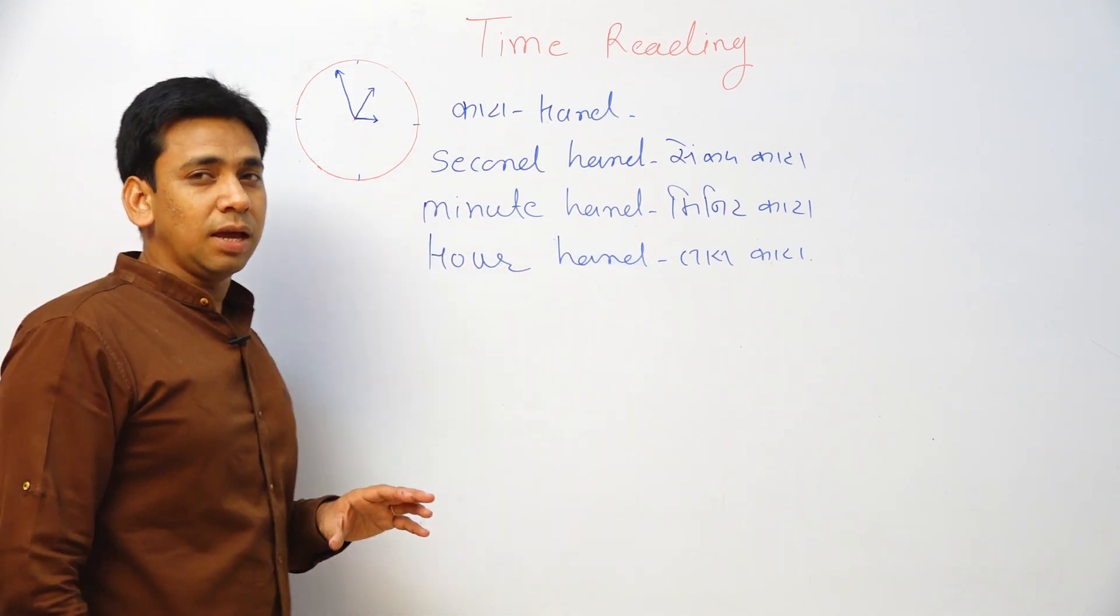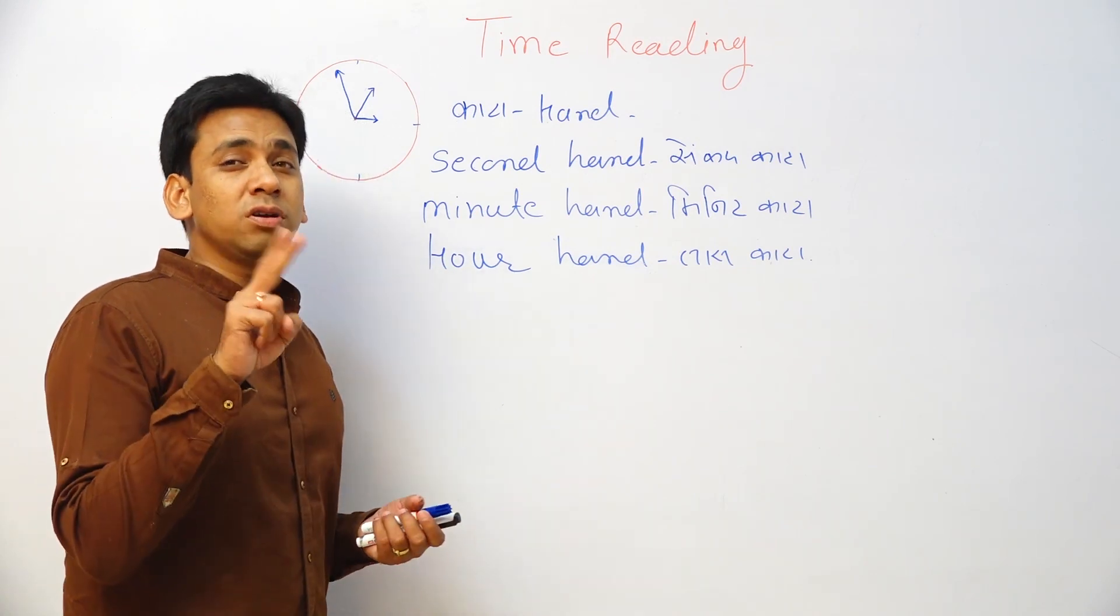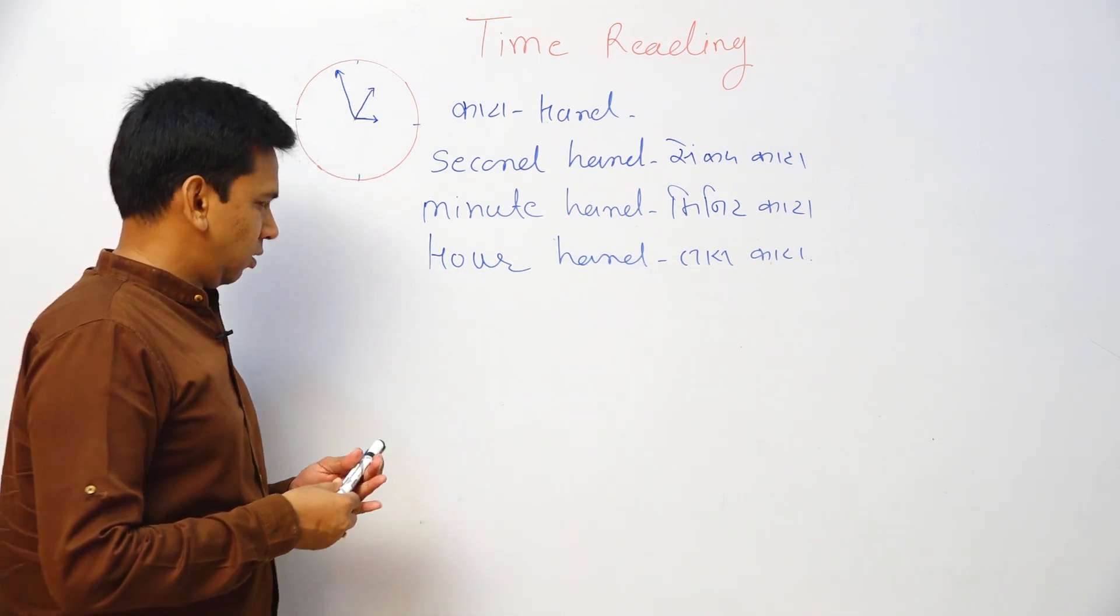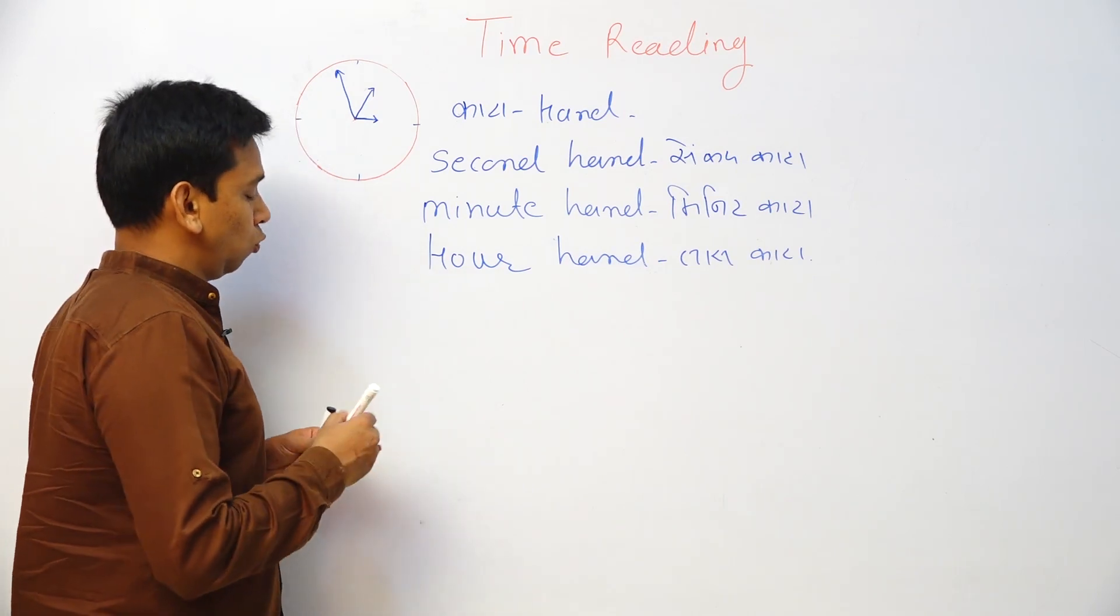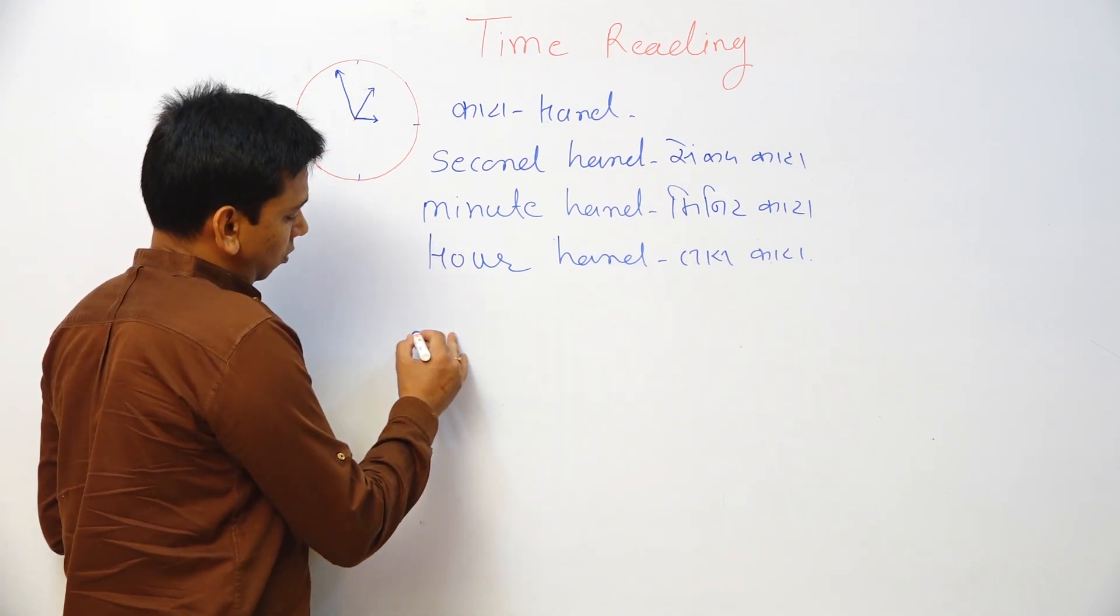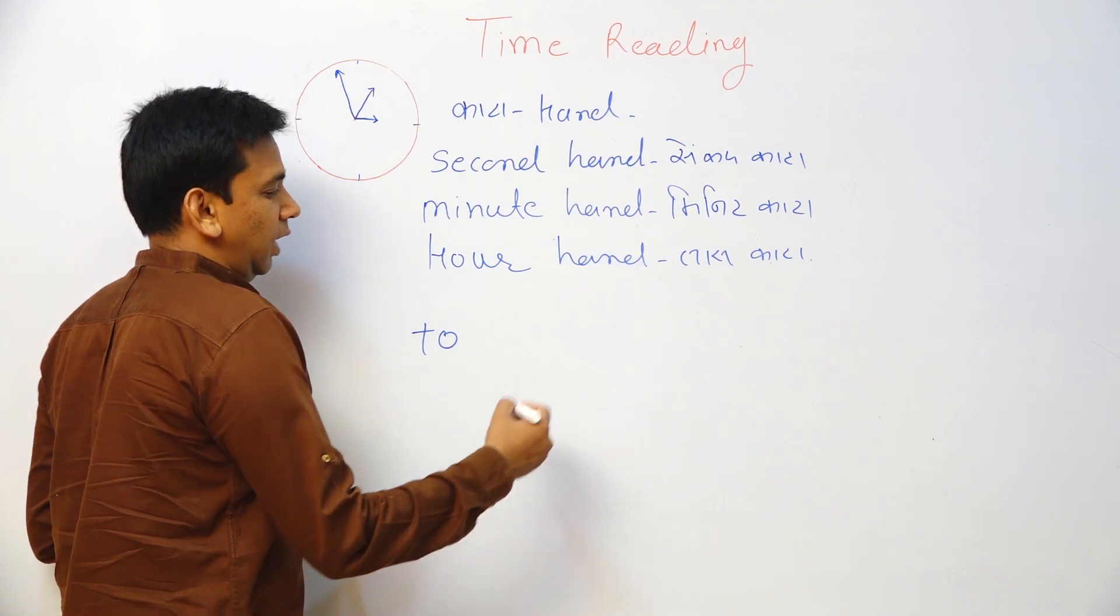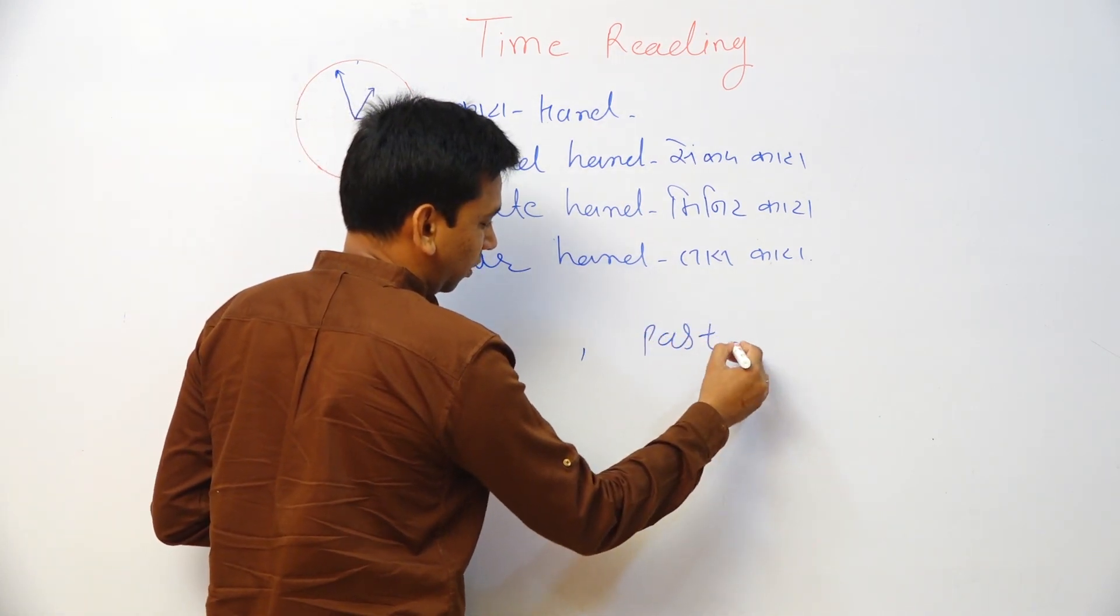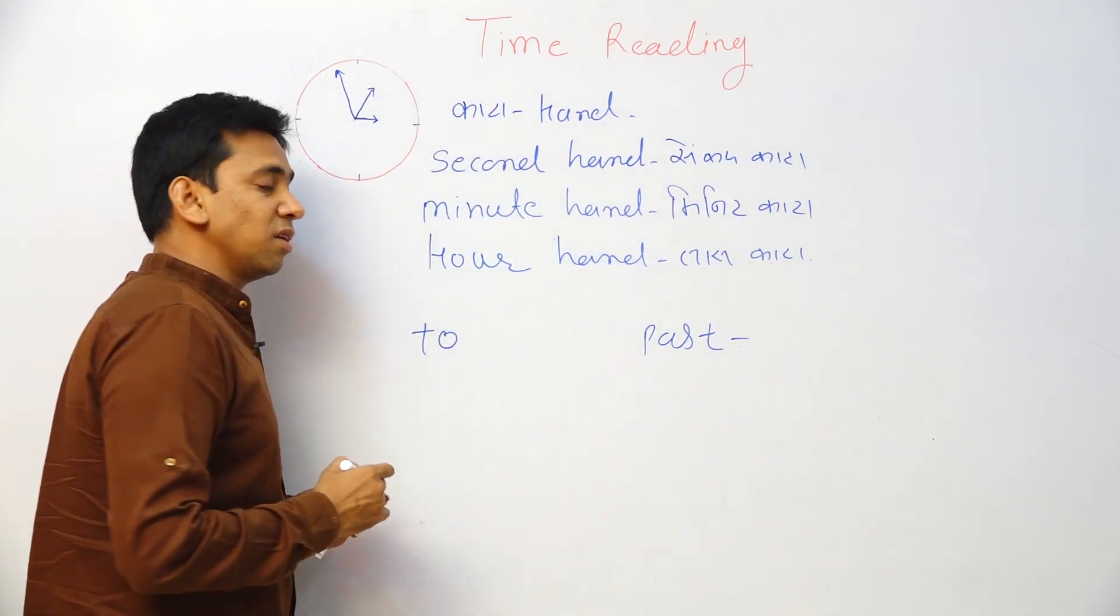Now while telling time, there are two important concepts in English. First concept is what? That is called 'to'. It is called 'to' and one is called 'past'. Now what is 'to' and what is 'past'?